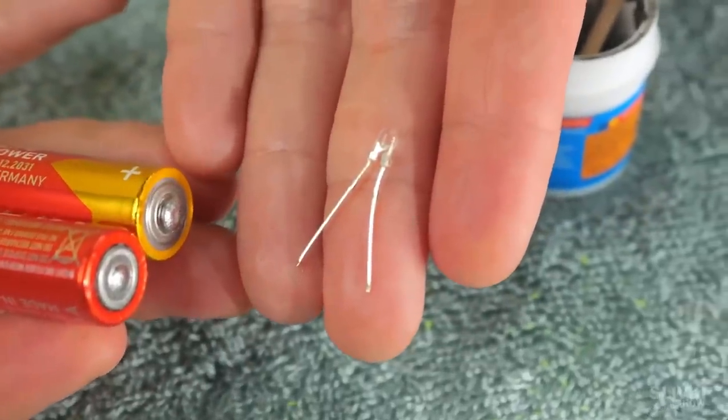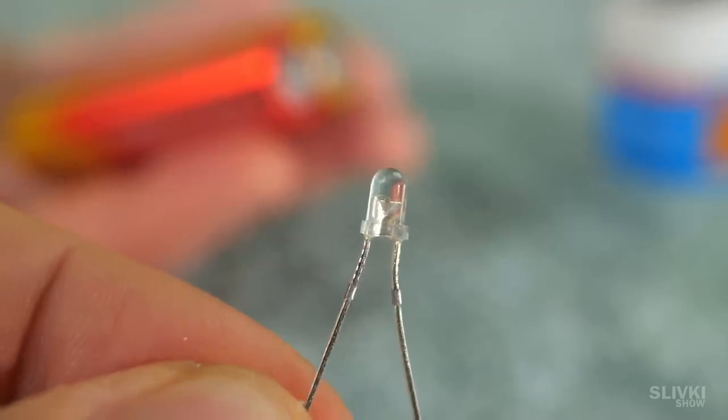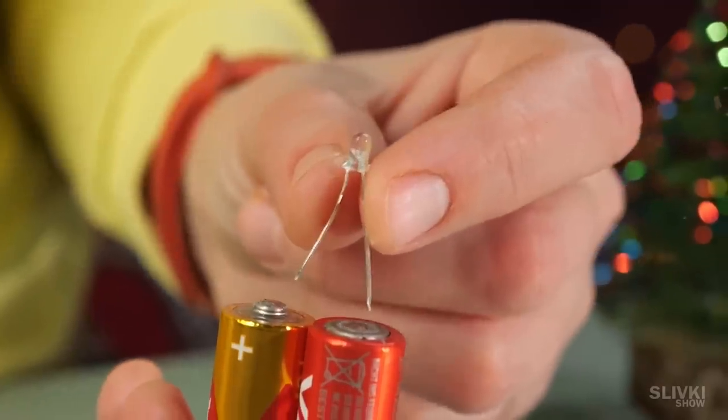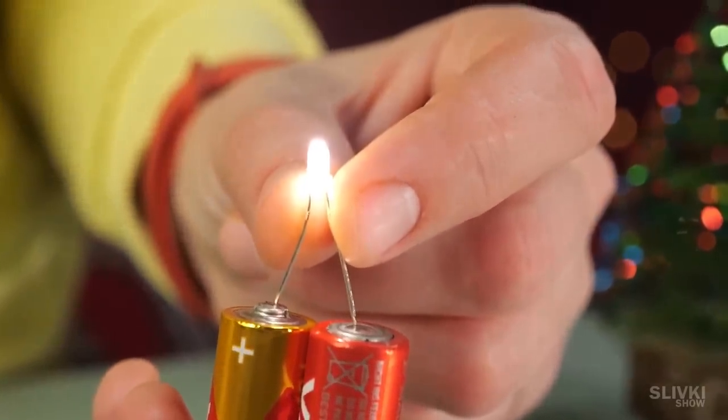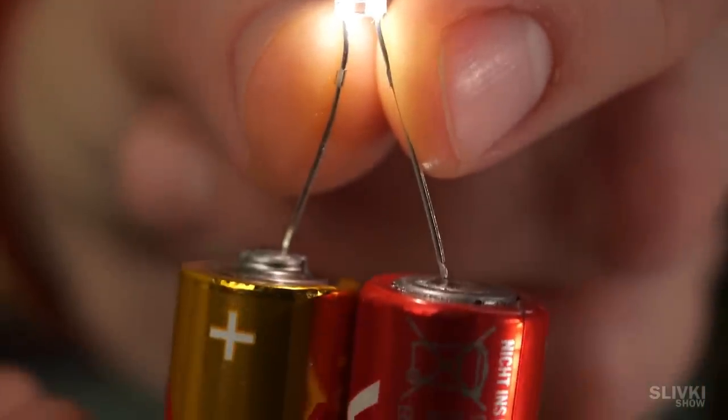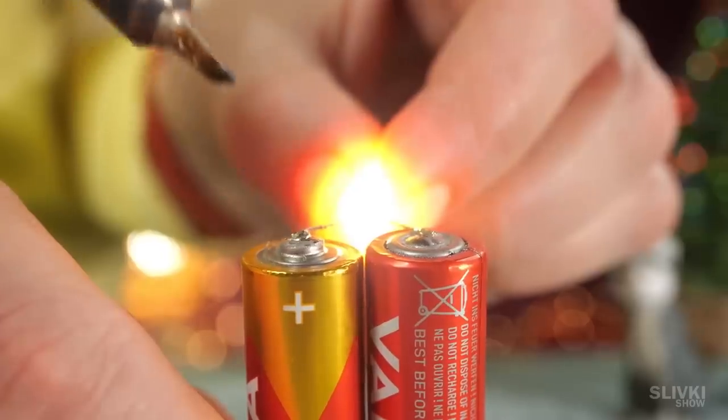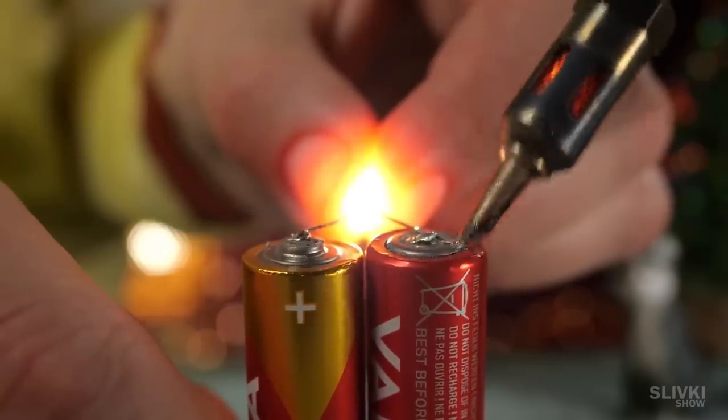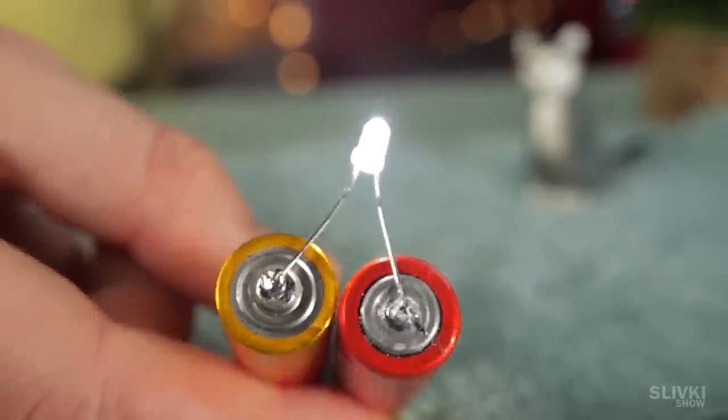Next we need an ordinary white 3 volts LED which you can buy or take out of some old device. Our batteries when soldered together give out 3 volts which is enough to allow this LED to shine from them. Now we solder the LED in the correct polarity and get a perpetual flashlight like this.